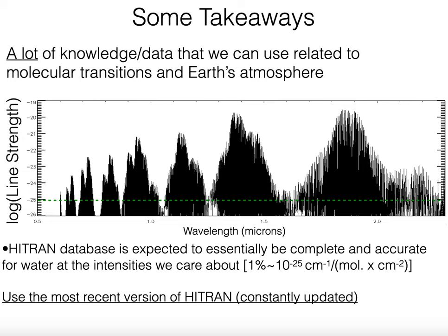There's a lot of knowledge and data out there related to molecular transitions and Earth's atmosphere that we can and should be using. We should try to interface with communities studying Earth's atmosphere for other reasons—for example, studying telluric CO2 absorption to understand global warming. The HITRAN database is expected to be essentially complete and accurate for water lines at the intensities we care about. This plot shows telluric water lines from HITRAN as a function of wavelength versus line strength; 10^-25 is approximately a one-percent line at a standard 3,000-meter high observatory. You should use the most recent versions of HITRAN, and check back often as it's constantly being updated.